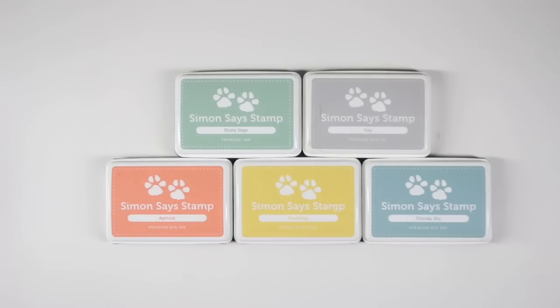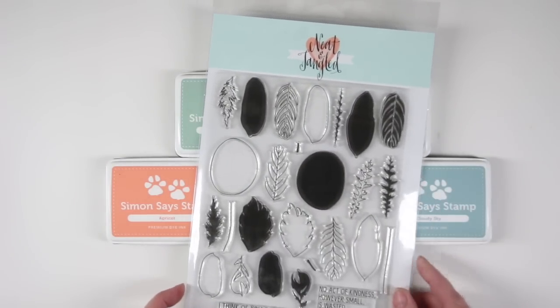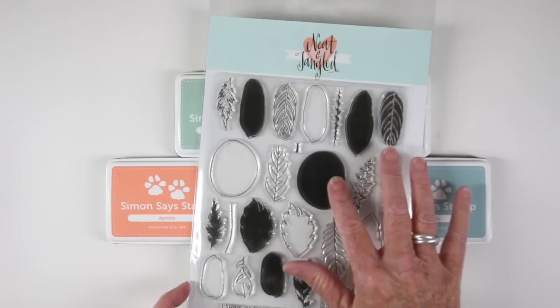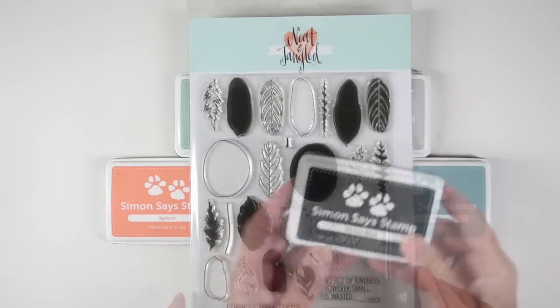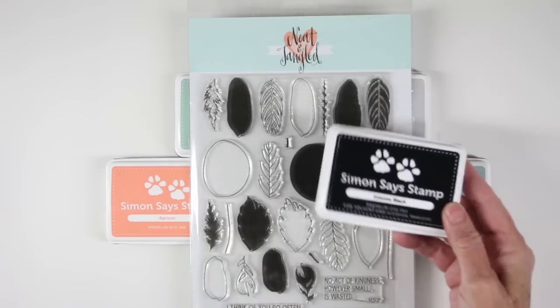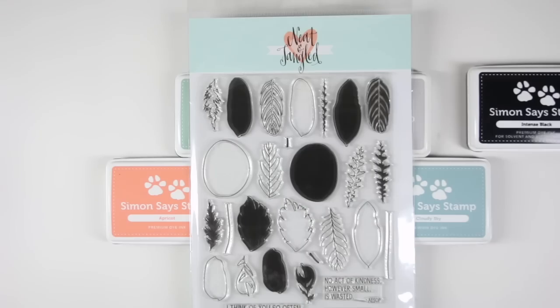The stamps I'm using for this card are from Neat and Tangled and it's called Calathea. It has really nice solid images and also outline images which are perfect for offset stamping. I'll be stamping all the solid images with my colors and then the outline with the Simon Says Stamp intense black ink.